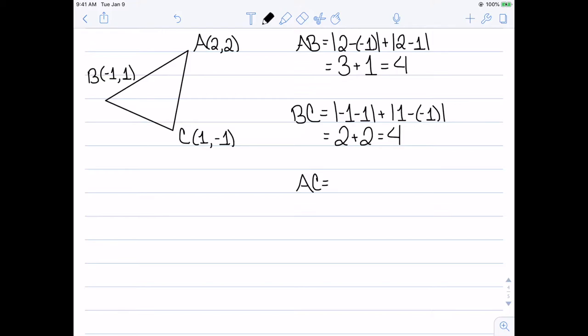Finally, let's consider the distance between a and c. My formula gives me the absolute value of 2 minus 1 plus the absolute value of 2 minus negative 1, which simplifies to 1 plus 3, or 4. So since all the sides are equal, we now have that this is an equilateral triangle.